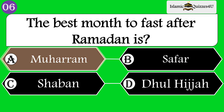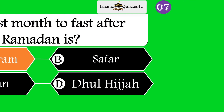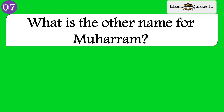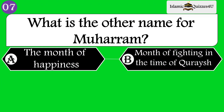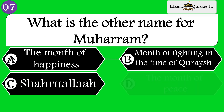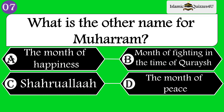Correct option is Muharram. Question number 7: What is the other name for Muharram? Option A: The month of happiness. Option B: Month of fighting in the time of Quraysh. Option C: Shahrul-Allah. Option D: The month of peace.